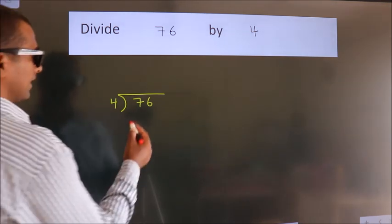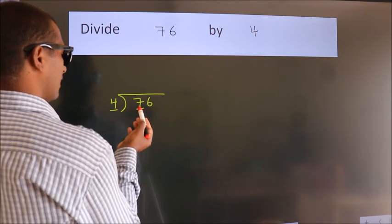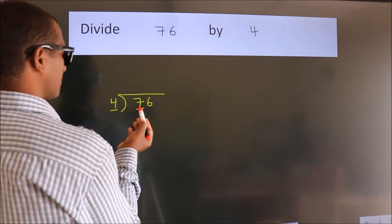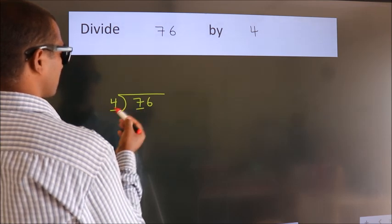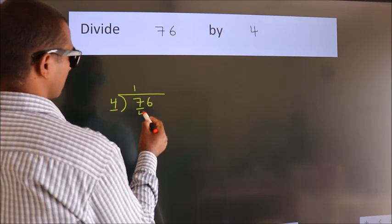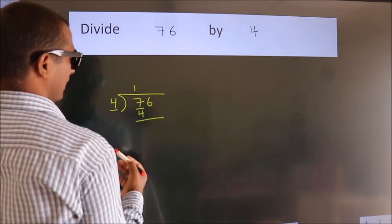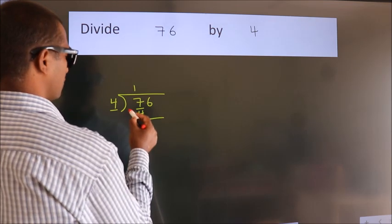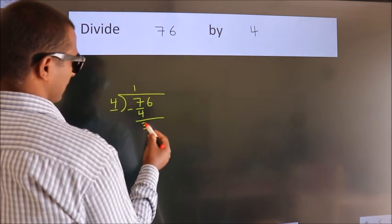Here we have 7, and here 4. A number close to 7 in the 4 times table is 4 once 4. Now we should subtract. We get 3.